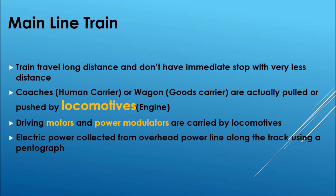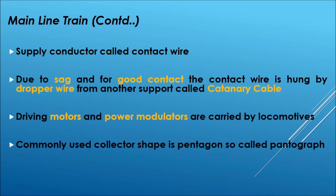For AC coaches, heavy power is needed. Since the locomotive does not supply power to the coaches, the coaches must have their own power supply. That is why one or two dedicated coaches at the front and back contain generators to supply power to the rest of the train.